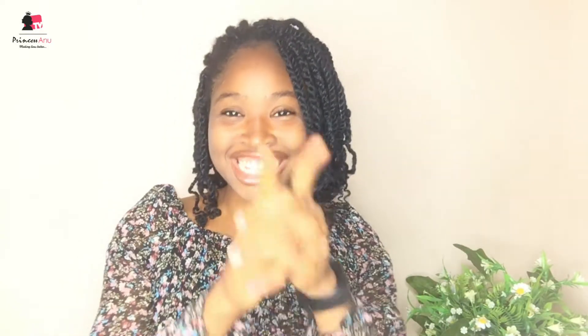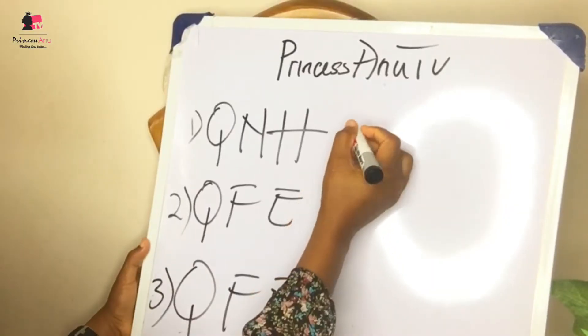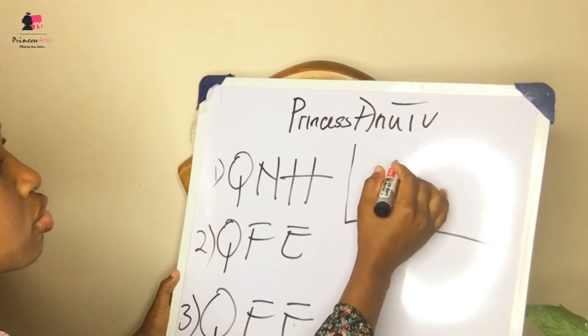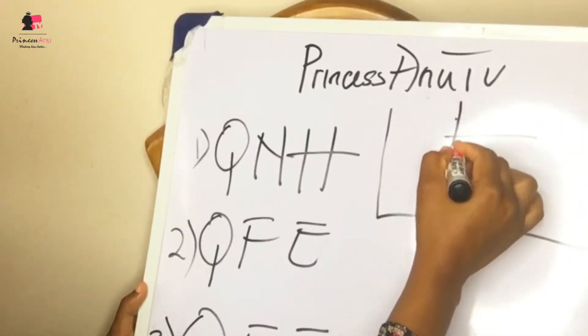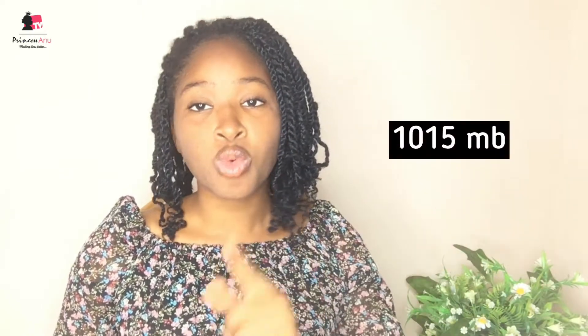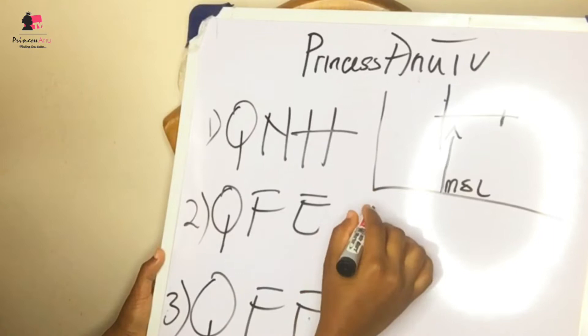So let's go right into it. QNH is the atmospheric pressure from mean sea level. For example, if you're in Zaria and the air traffic controller gives you QNH 1015, when you put 1015 on your altimeter you are going to see your altitude reading approximately 2150 or 2200 feet. That's what your altimeter is likely going to read when you set the QNH.